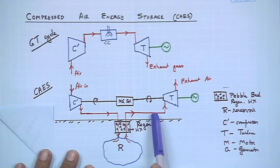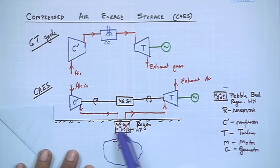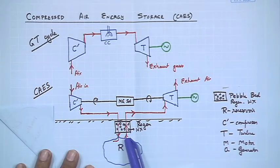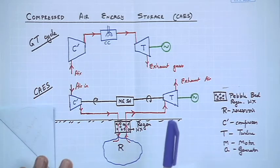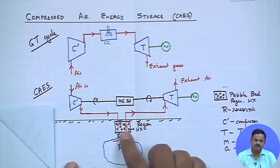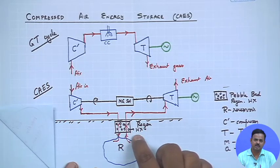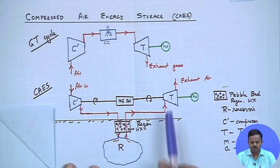This turbine is a peaking turbine that gives us additional electricity. We know that if the turbine inlet temperature is high, we get more work out of it. So we need to heat up the compressed air. This is done using a regenerative heat exchanger — a pebble bed is one example — through which the compressed air passes before storage, transferring heat to the pebble bed. When the compressed air is fed to the turbine, it first passes through this regenerative heat exchanger to heat up, then goes to the turbine.